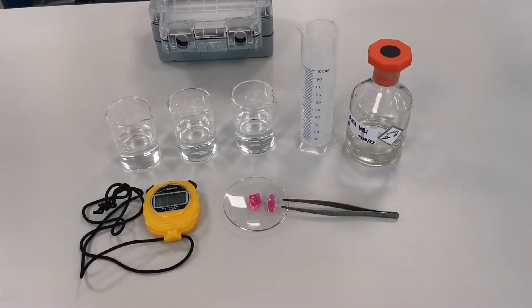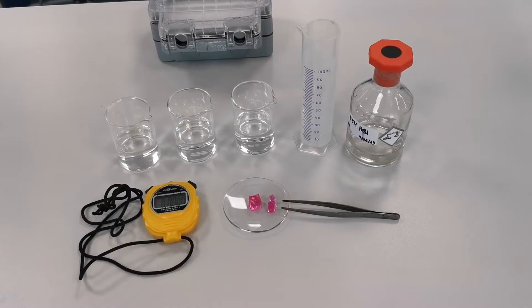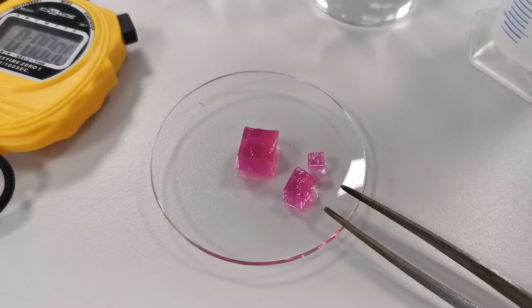Hello everyone and welcome back to another Science for Breakfast experiment. Today we're going to explore how surface area to volume ratio affects the rate of diffusion.